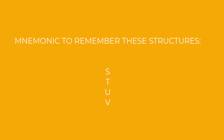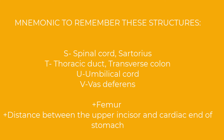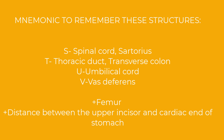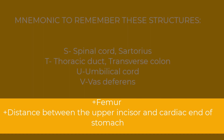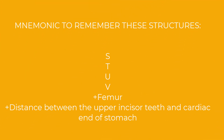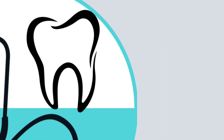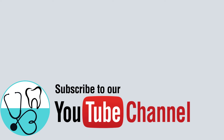Use the mnemonic STUV: S for Spinal cord and Sartorius, T for Thoracic duct and Transverse colon, U for Umbilical cord, and V for Vas deferens. In addition, remember two extra structures not in the mnemonic: femur and the distance between the maxillary incisor and the cardiac end of the stomach. So it's STUV plus femur plus incisor-to-cardiac-end distance. Stay subscribed for more mnemonics — Made It, made it for you.